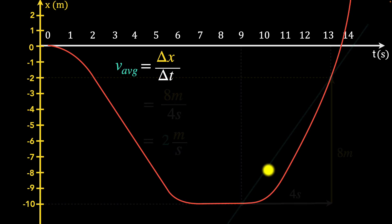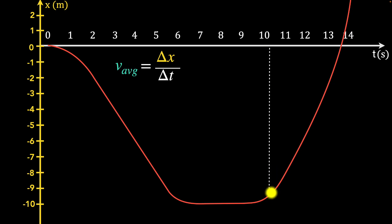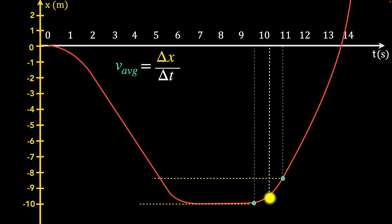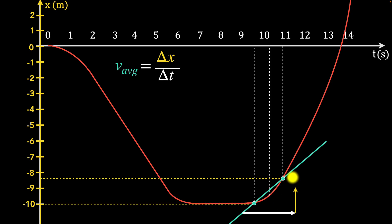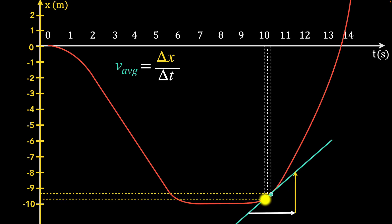Now here's an interesting question: what is the velocity at a particular moment in time, say at ten seconds? There is no time interval — delta t is zero, and so delta x is also zero. It seems impossible — zero divided by zero. But here's a way to think about it: first, calculate the average velocity between two nearby points by drawing a secant line and calculating its slope. That's a good estimate, but not the exact velocity at ten seconds. We can make the estimate better by choosing the two points closer together.